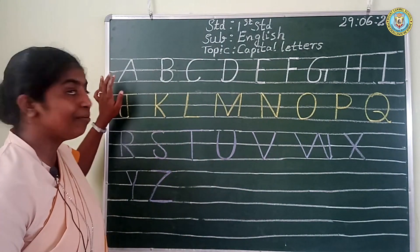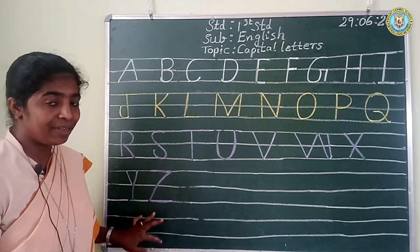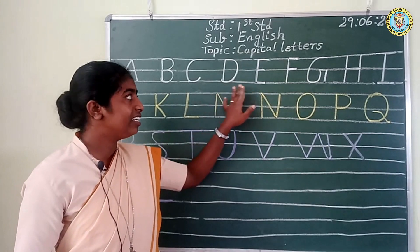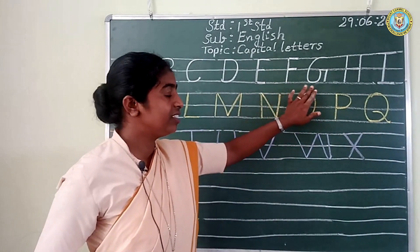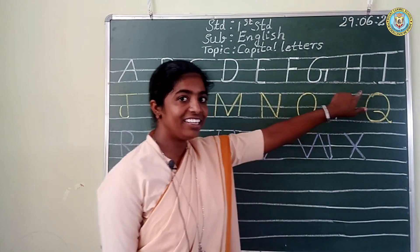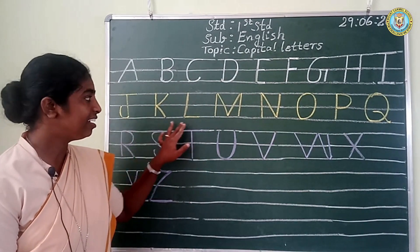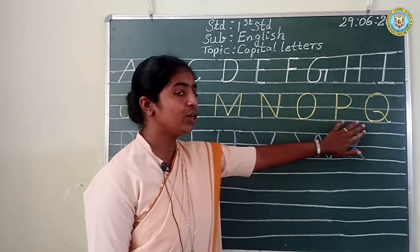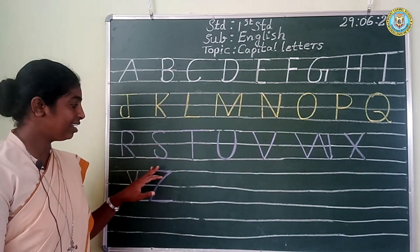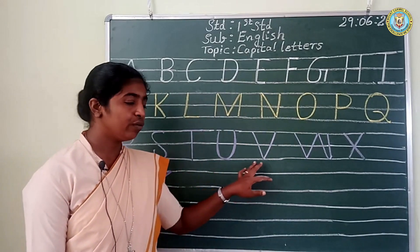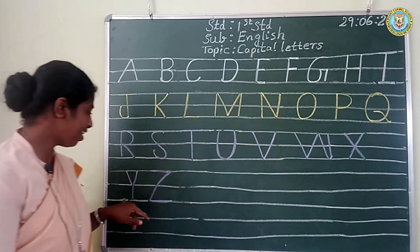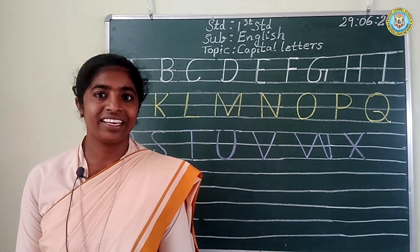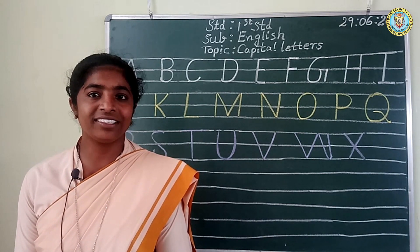We have learned the capital letters from A to Z. Now repeat after me. A, B, C, D, E, F, G, H, I, J, K, L, M, N, O, P, Q, R, S, T, U, V, W, X, Y, Z. Yes dear children, you have all learned today the capital letters from A to Z. Keep on practicing and repeating the capital letters A to Z. Thank you.